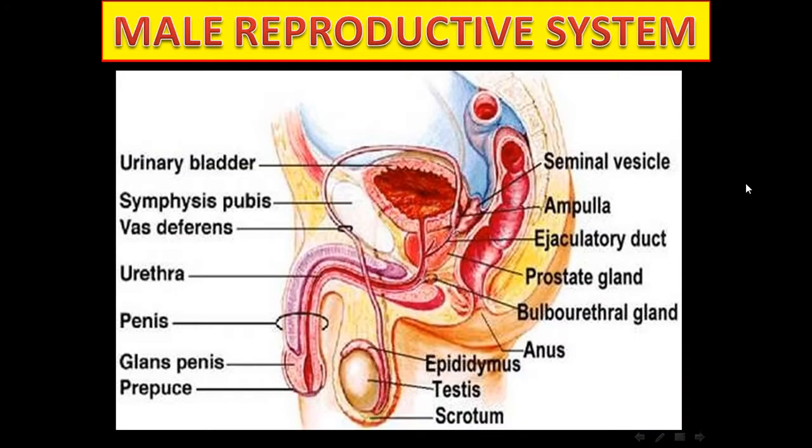The male reproductive system consists of the testes, duct system, accessory glands, and penis. The testes have two functions: production of male gametes, and synthesis and secretion of testosterone.